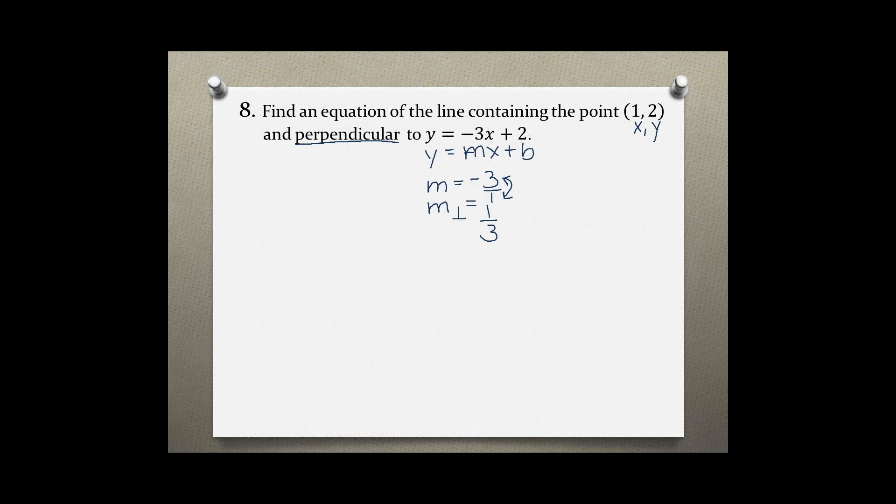Using this new perpendicular slope and the given point, which we can label x₁, y₁, we can use the point-slope form of an equation: y - y₁ = m(x - x₁). Plugging in all the values we have,